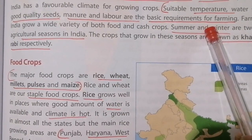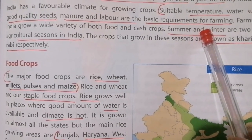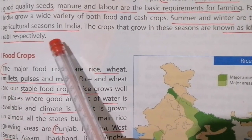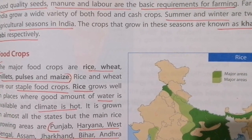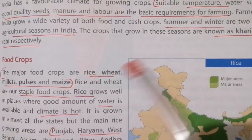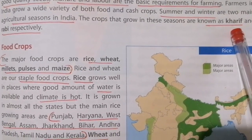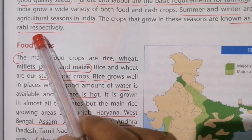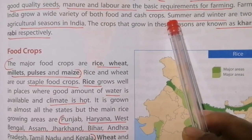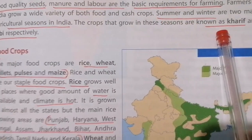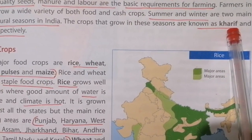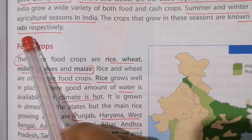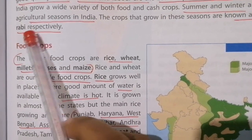So what are the two main agricultural seasons? Summer and winter are the two main agricultural seasons in India. The summer season is called Kharif — K-H-A-R-I-F — and the winter season is called Rabi — R-A-B-I.